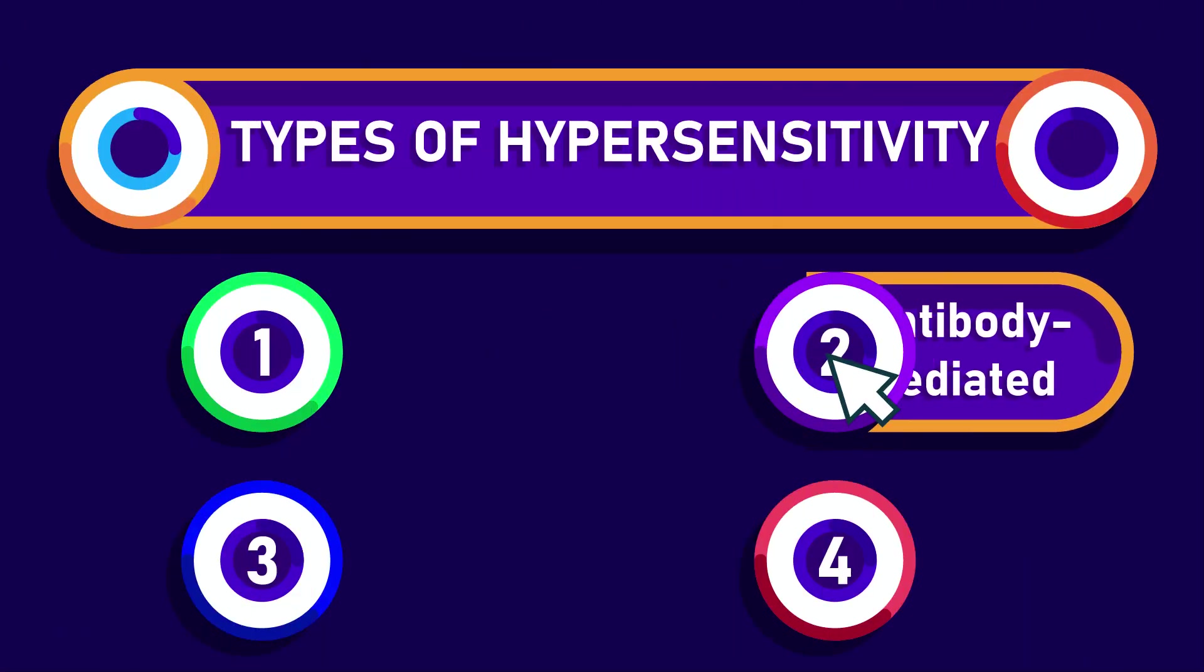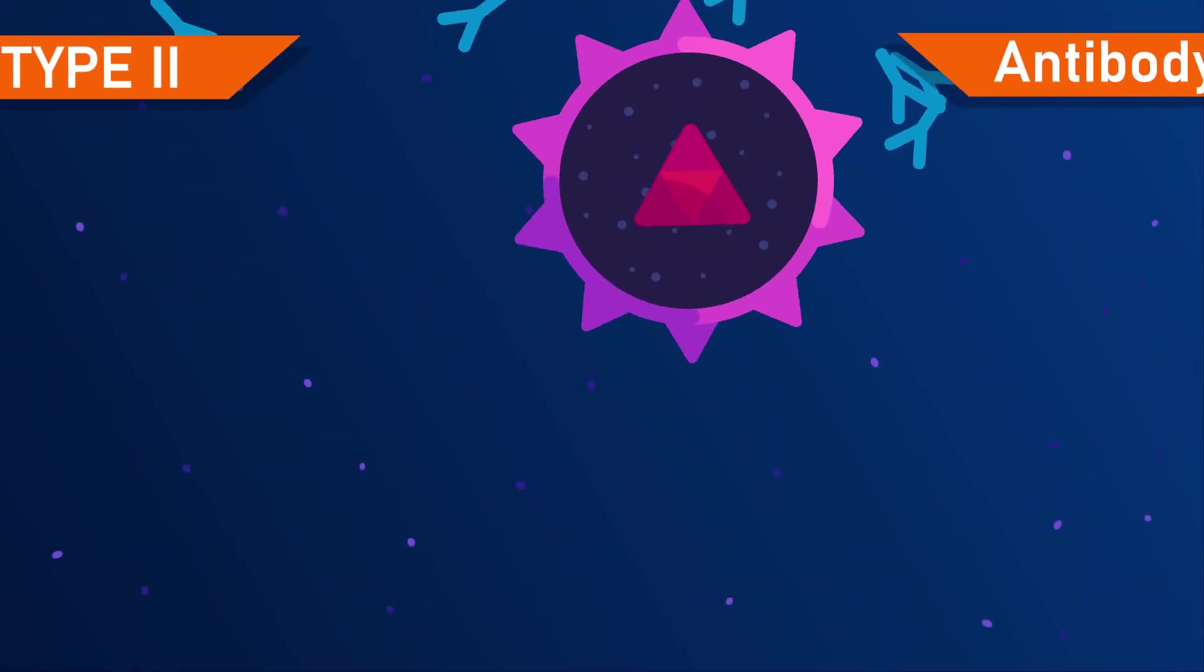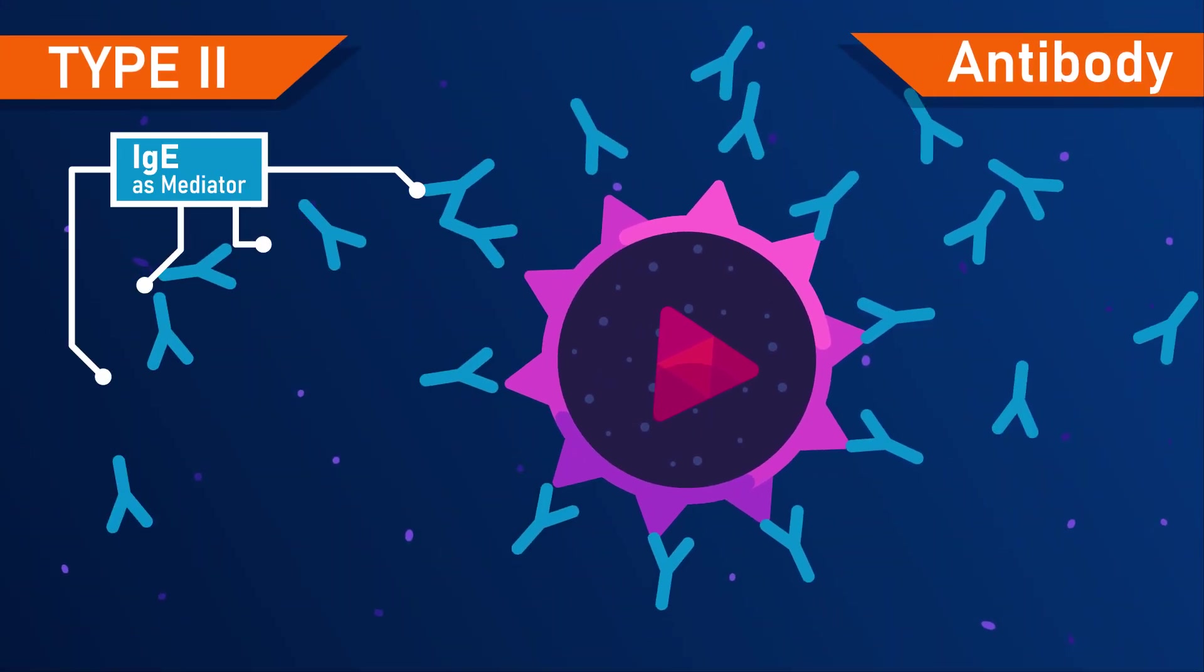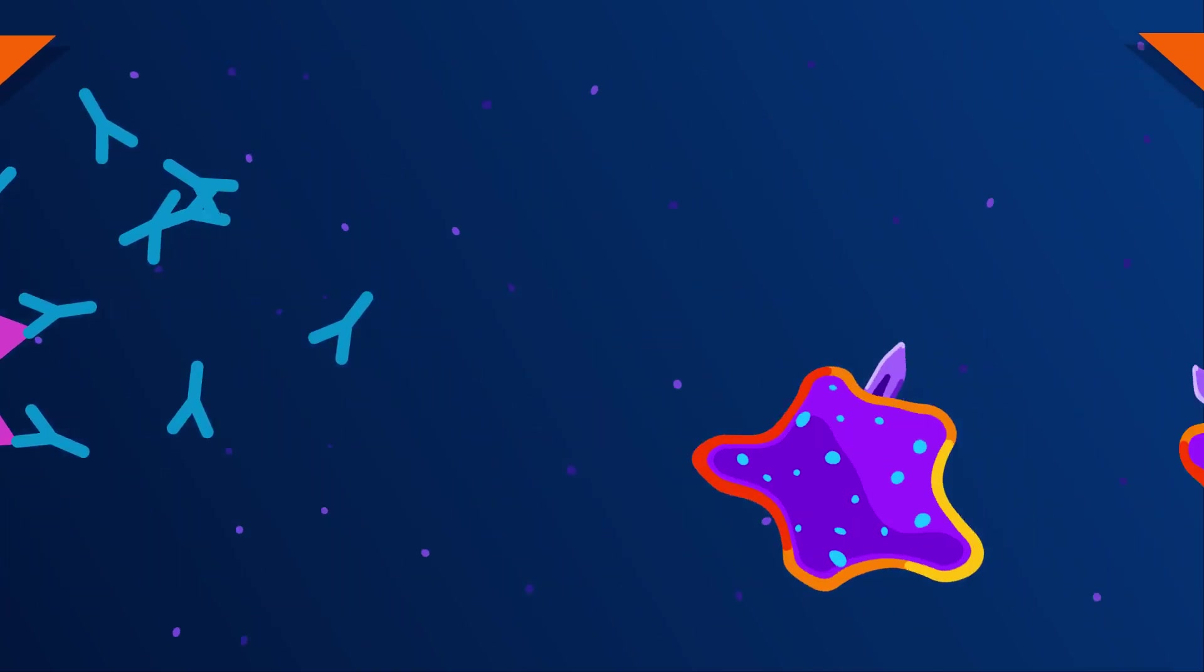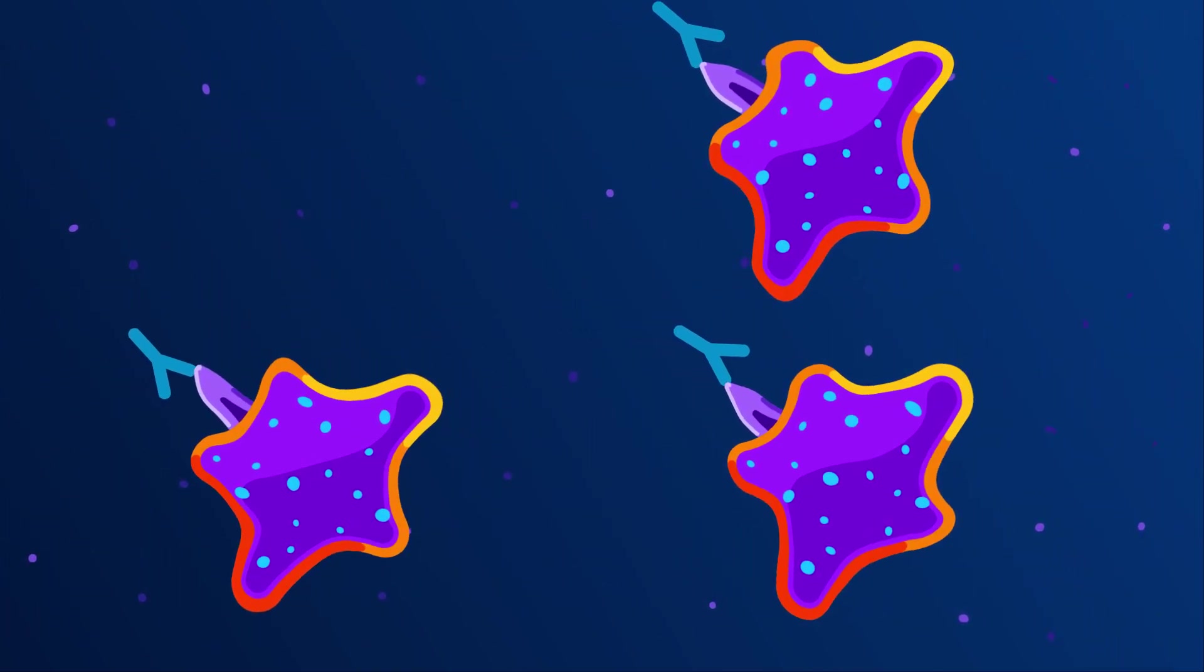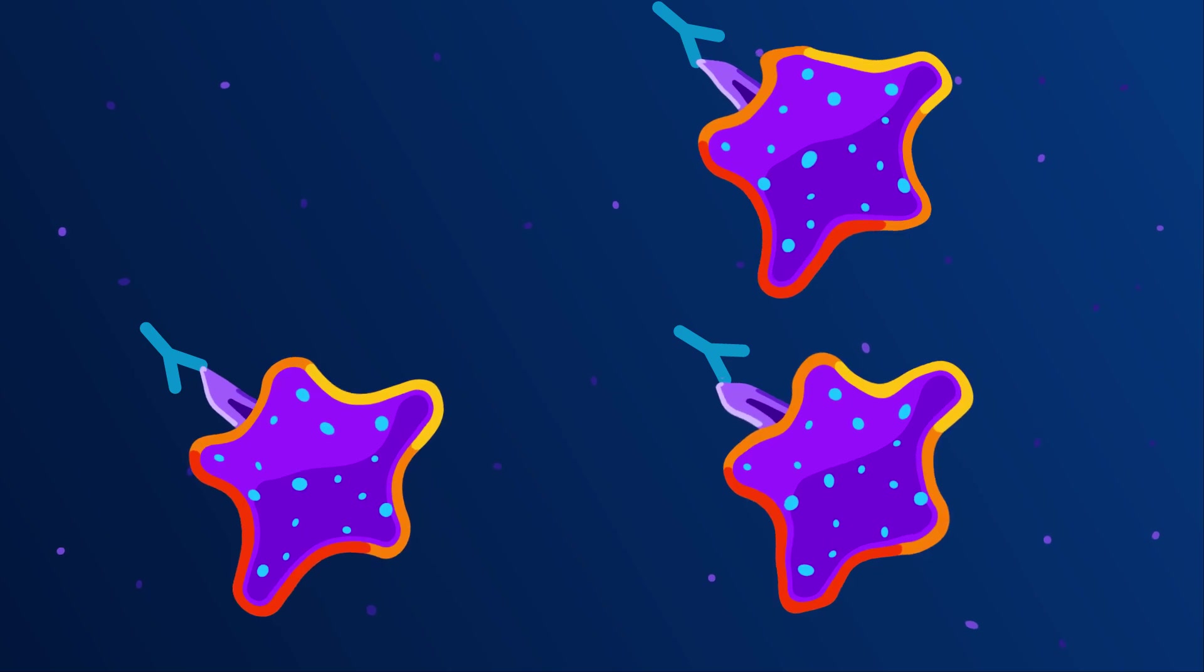Type 2 or antibody-mediated hypersensitivity. In type 2, antibodies produced against a foreign antigen may become cross-reactive with the self-component of tissue. Hence, they are called autoantibodies.